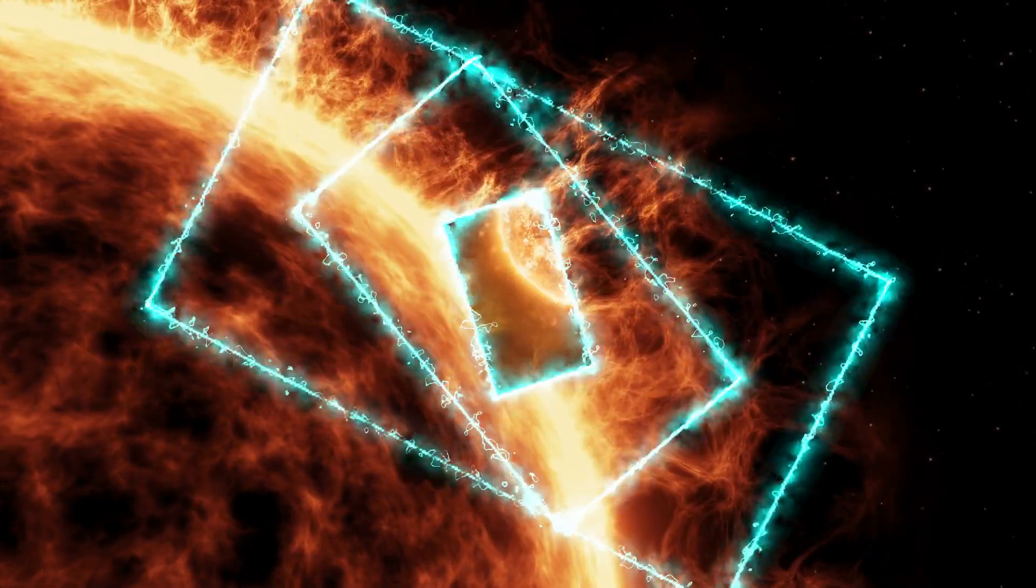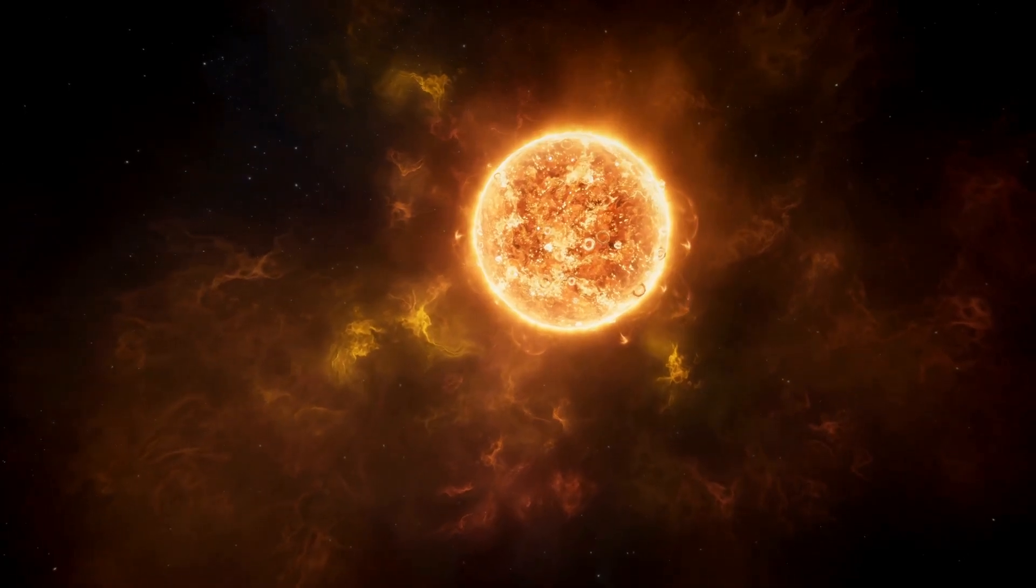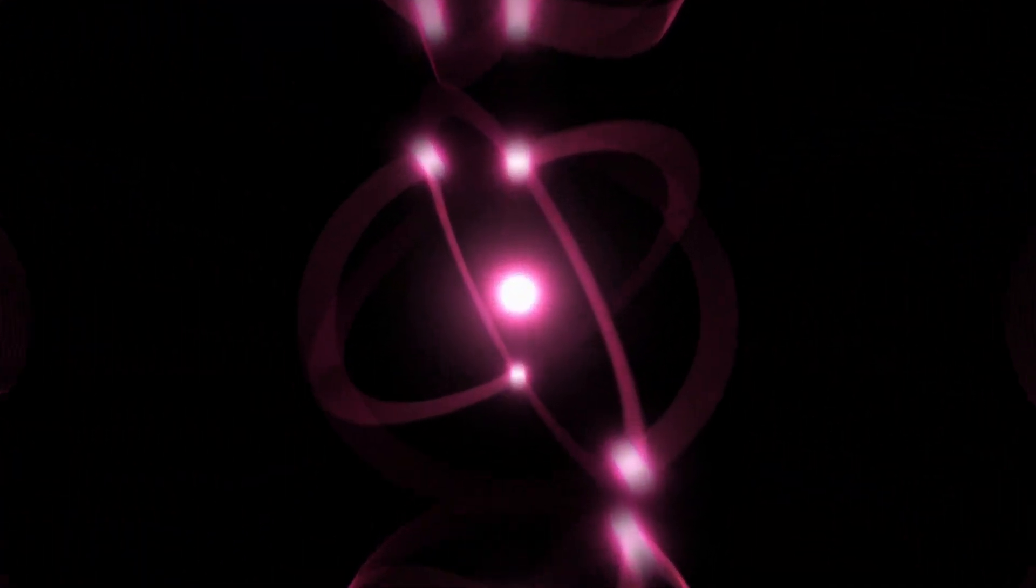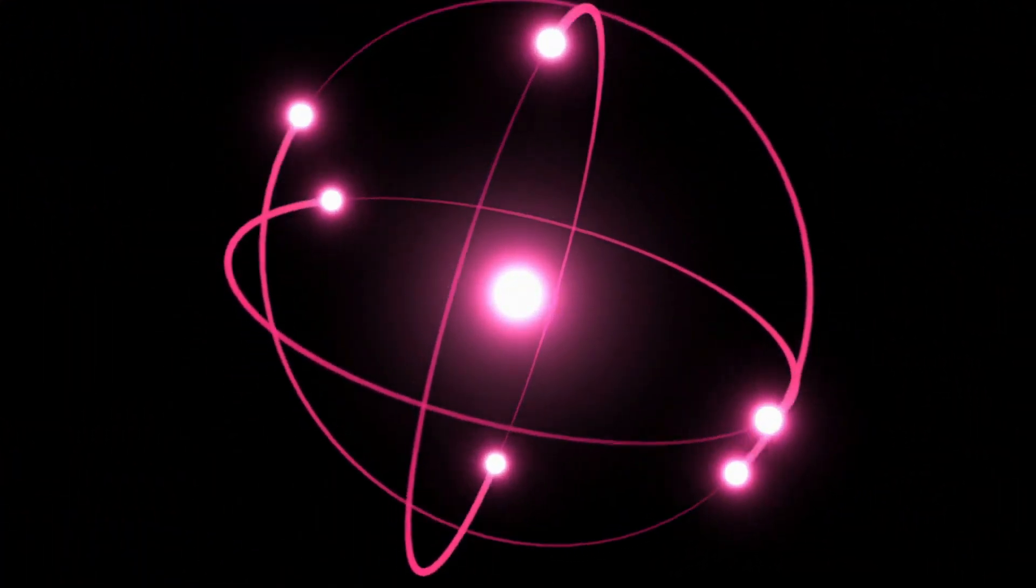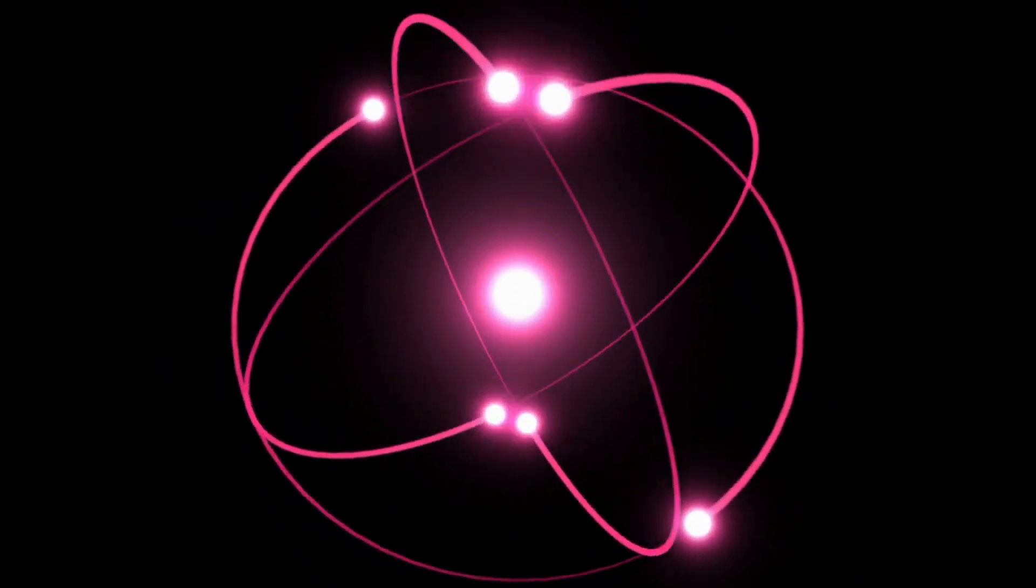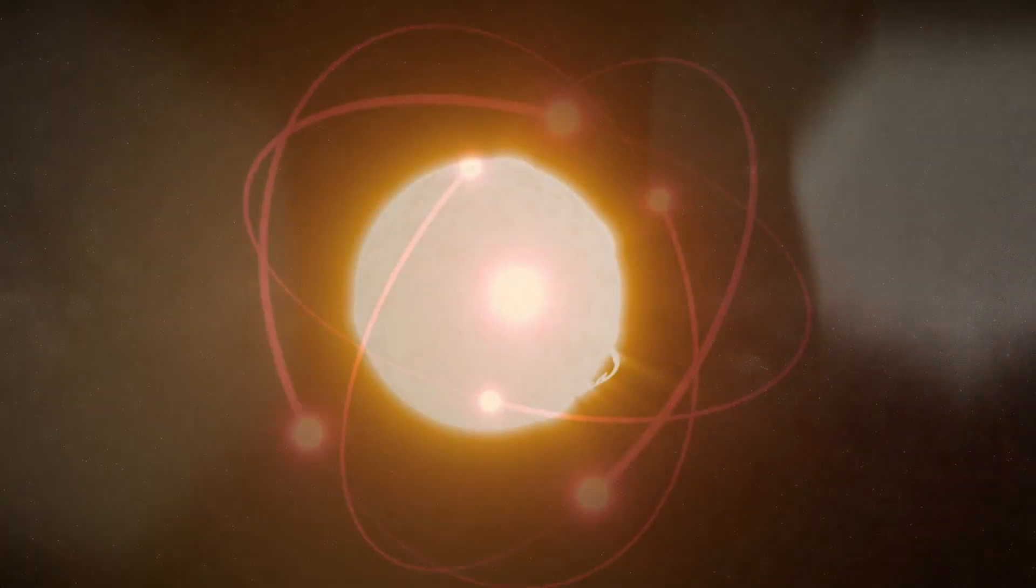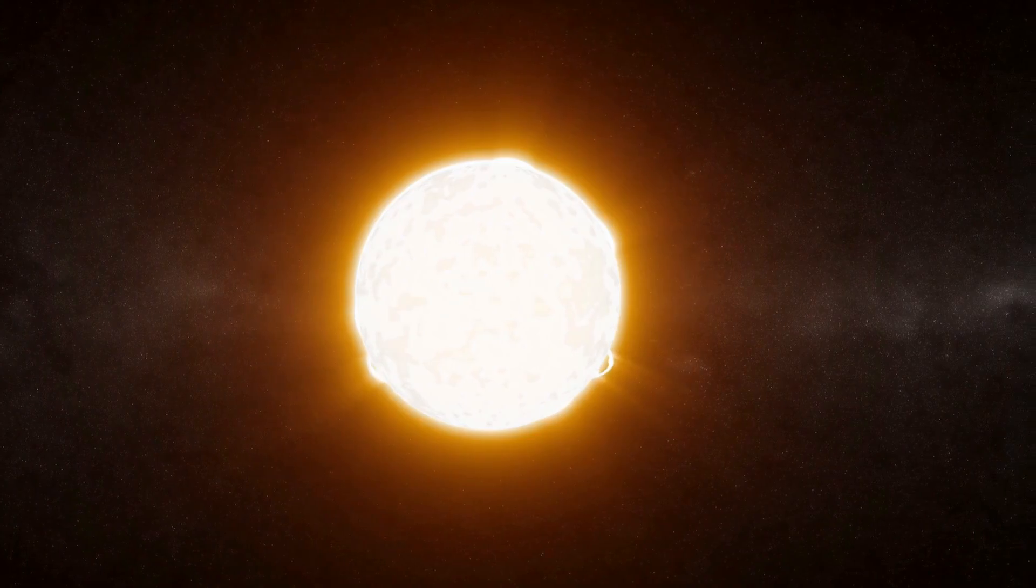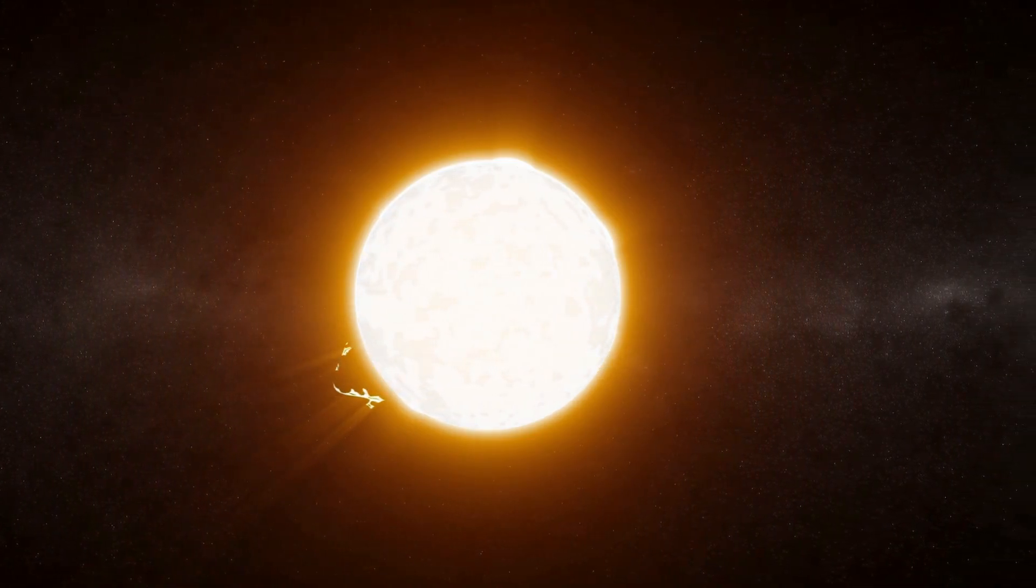exerts an outward thrust. Whether conceived as individual photons or electromagnetic waves, the trajectory of radiation from the core towards the sun's outer layers generates an outward force in all directions.